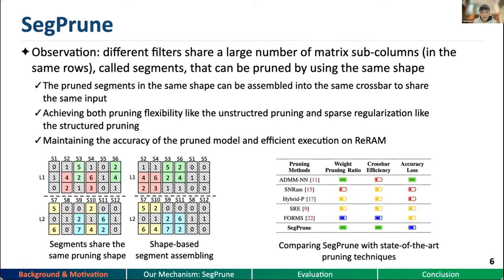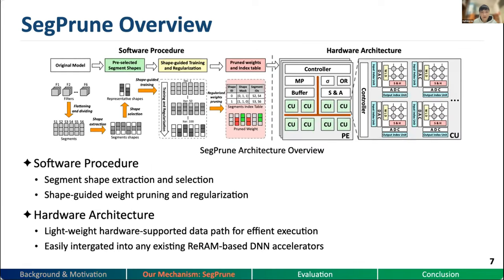Interestingly, we observed that different filters share a large number of matrix sub-columns called segments that can be pruned using the same shape. For example, S2 with S4 and S3 with S6 are in the same shape after pruning. These pruning segments in the same shape can be assembled into the same crossbar to share the same input. In this way, we achieve both pruning flexibility like unstructured pruning and sparse regularization like structured pruning, maintaining the accuracy of the pruning models and efficient execution on ReRAM. To this end, we propose a new crossbar-friendly pruning technique called SyncPrune.